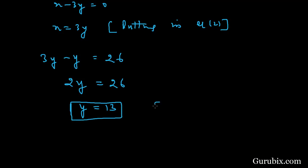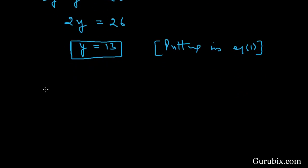Now we shall put this value in equation number one so that we can find the value of x. Equation number one is x minus 3y equals zero, and y is 13, so x minus 3 times 13 equals zero. This means x equals 39.